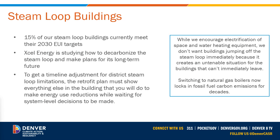Another timeline adjustment reason is steam loop system limitations. If you're looking to get off of the steam loop but are waiting for system-level decisions to be made, a timeline adjustment is available. The retrofit plan must show everything else that you plan to do in the building to make energy use reductions while waiting for decisions to be made regarding the steam loop.